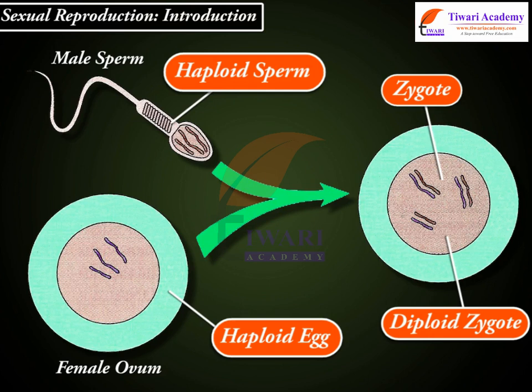Advantages of sexual reproduction: First, the offspring produced due to sexual reproduction adapt themselves successfully to changing environmental conditions. Second, formation of gametes by meiosis and their fusion during fertilization produce reshuffling of genes and variation in offspring. These variations help them in natural selection and evolution.